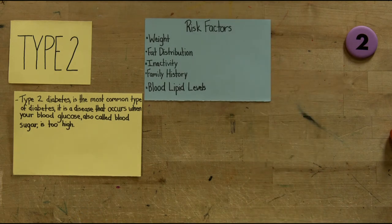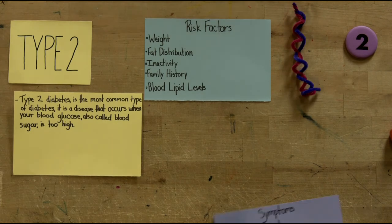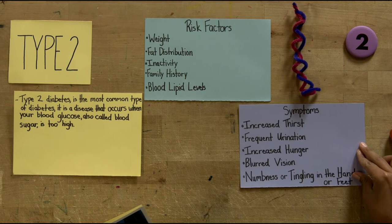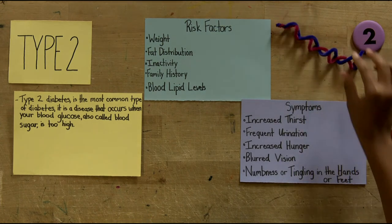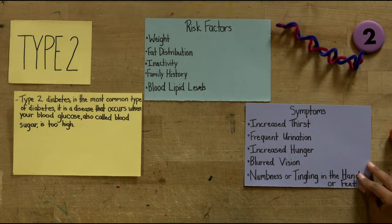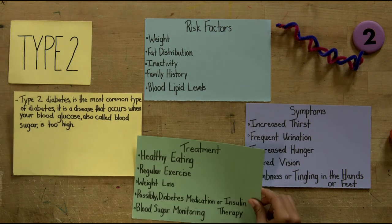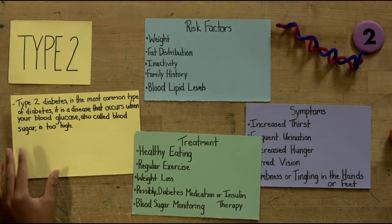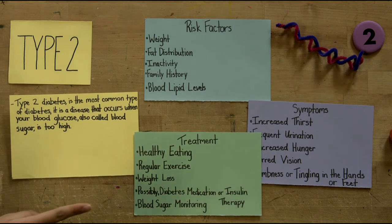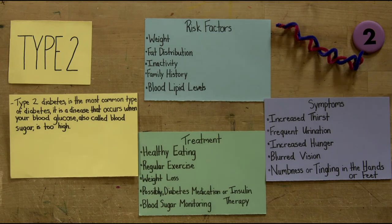Risk factors for Type 2 include weight, fat distribution, inactivity, family history, and blood lipid levels. Symptoms include increased thirst, frequent urination, increased hunger, blurred vision, and numbness or tingling in the hands or feet. Treatment involves healthy eating, regular exercise, weight loss, possibly diabetes medication or insulin therapy, and blood sugar monitoring.